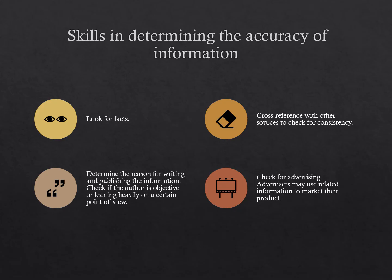Skills in determining the accuracy of information: Look for facts and cross-reference with other sources to check for consistency. Determine the reasons for writing and publishing the information. Check if the author is subjective or leaning heavily on a certain point of view. Check for advertising, as advertisers may use related information to market their product.